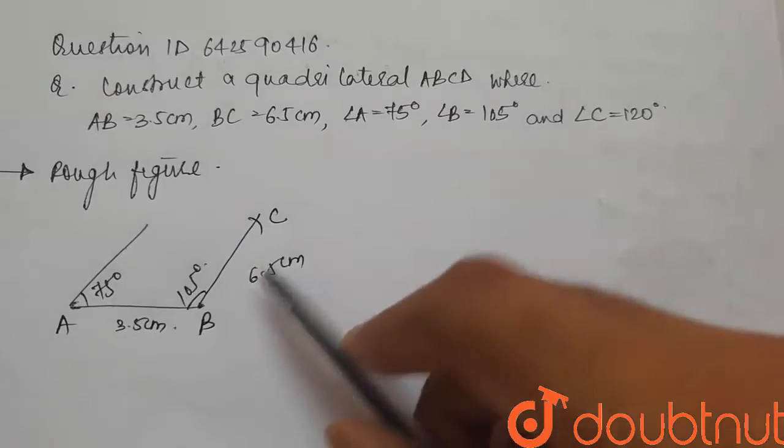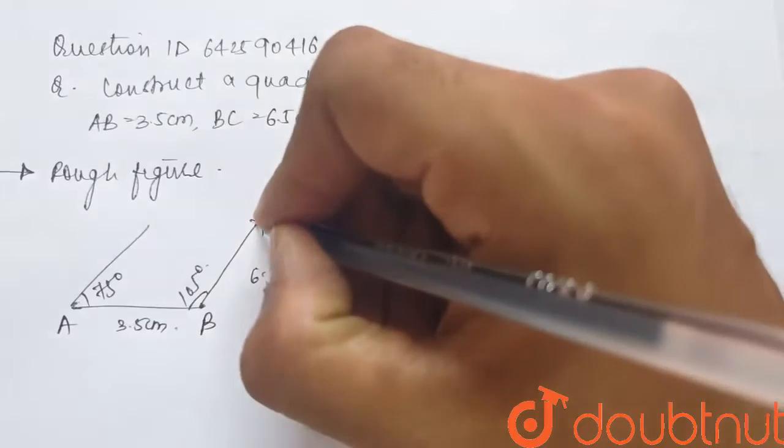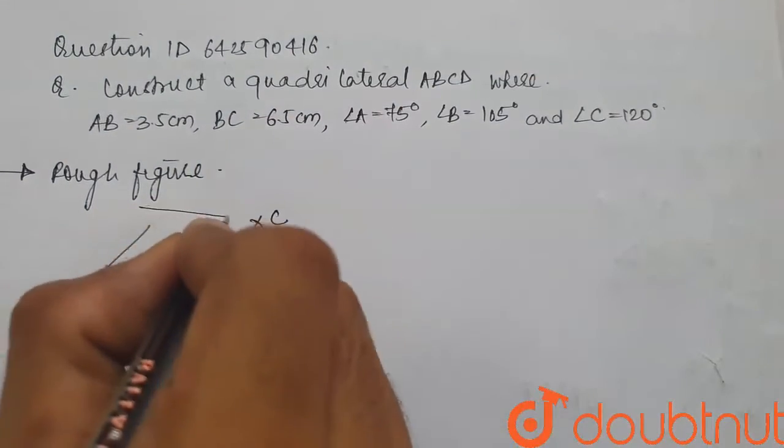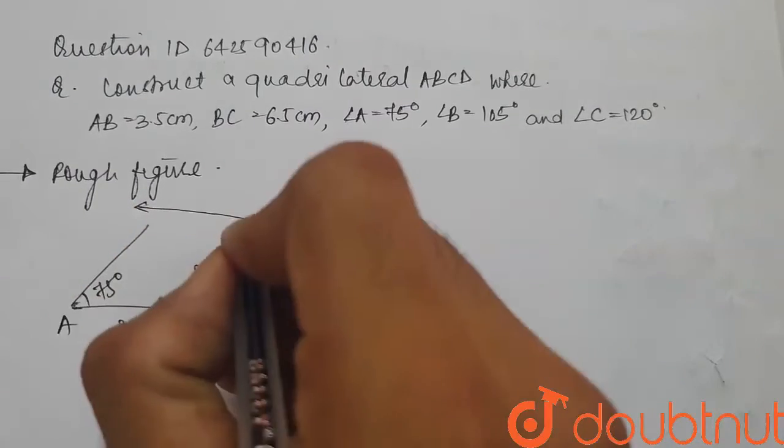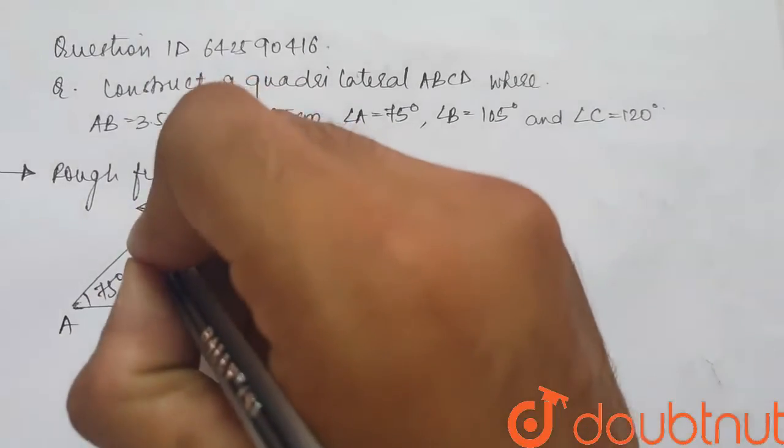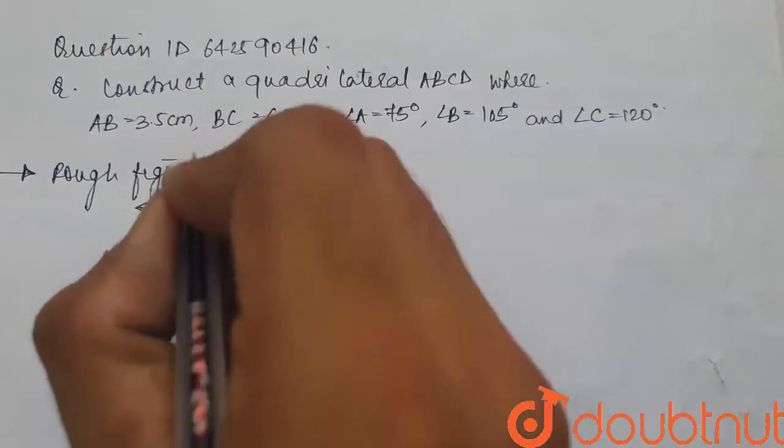Now that we have BC, we can mark angle C as 120 degrees to complete the quadrilateral. So, we'll again use a protractor here, make a 120 degree line to get our angle C and if you join this, this will be our point D.